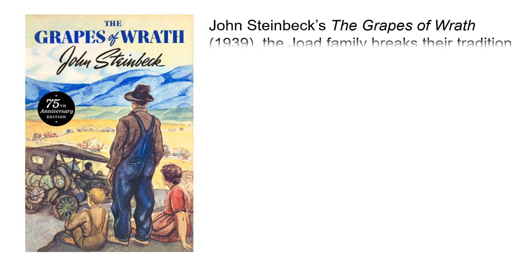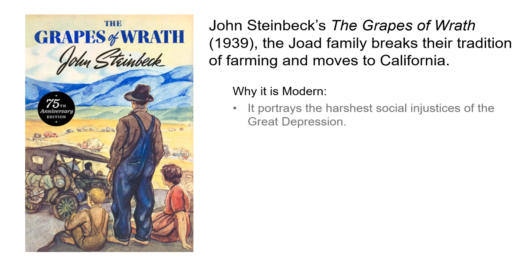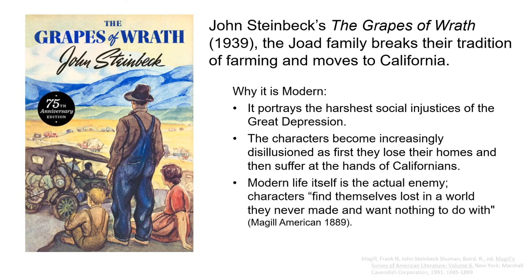John Steinbeck's 'Grapes of Wrath': the Joad family breaks their tradition of farming and moves to California. Why it's modern: it portrays the harshest social injustices of the Great Depression. The characters become increasingly disillusioned as they first lose their homes and then suffer at the hands of the Californians. Modern life is itself the actual enemy. The characters find themselves lost in a world they never made and want nothing to do with.